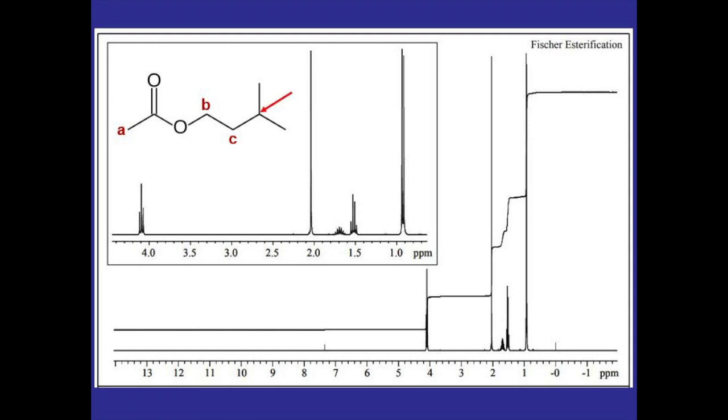We can label this hydrogen as D, and the six hydrogens on the ends of the iso group are all equivalent so we can label those as E. Since we know they're equivalent, we only had to label one of them.